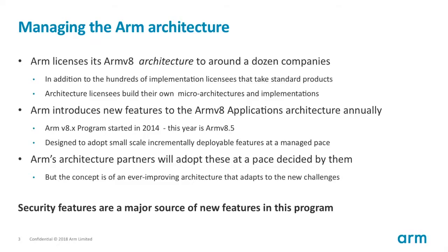ARMv8 is our latest version of the architecture — it's in pretty much everyone's phone if you bought one in the last three or four years. We have two fundamental business models: we make RTL-level designs that we sell to many people, and for a small number of licensees we license the architecture itself, allowing them to build a compliant processor from a clean sheet.